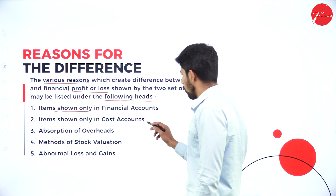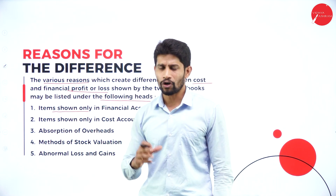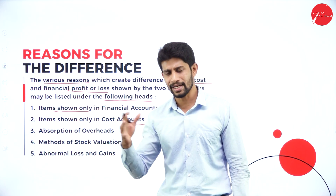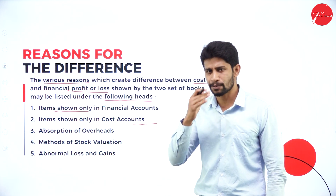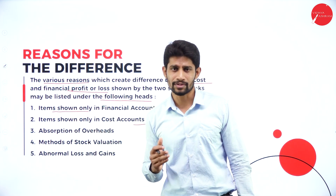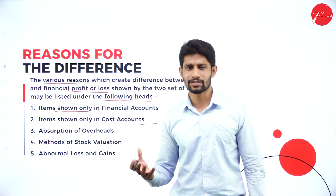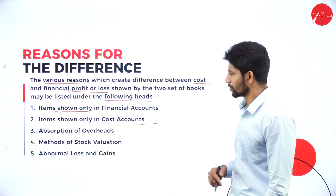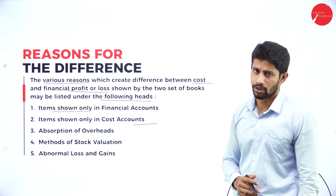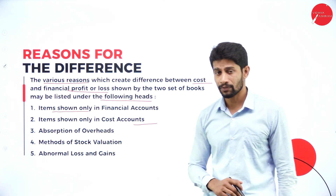Because of this, you can see a difference in the financial books as well as the costing books. The second reason: items shown only in the cost accounts. Here certain items are shown only in cost accounts. Because of that, there will be a difference in profit between the two accounts — cost and financial. For example, expenditures: if any expenditures are made, those expenditures are shown only in the cost sheet but not in the financial accounts. If not shown in the financial account, the profit will be less in the financial account compared to the costing account.